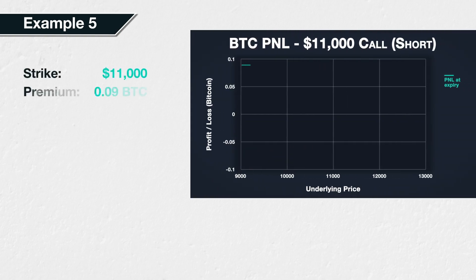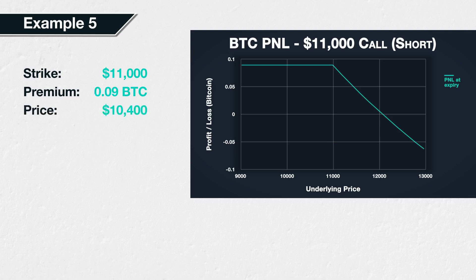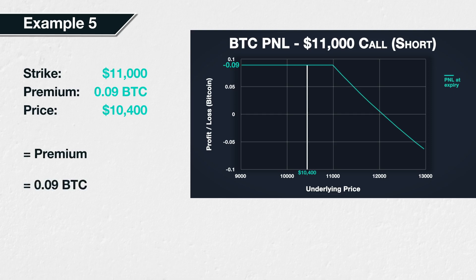Example five: suppose Bitcoin is currently trading at a price of ten thousand five hundred dollars. We expect the price to stop increasing, so we sell a Bitcoin call option with a strike price of eleven thousand dollars. The premium we collect is 0.09 BTC. At expiry, the price of Bitcoin has decreased slightly to ten thousand four hundred dollars. Since ten thousand four hundred is below the strike price of eleven thousand dollars, the option has no value, so our profit or loss is simply the premium we collected: 0.09 BTC. The short call position therefore made a profit of 0.09 BTC.